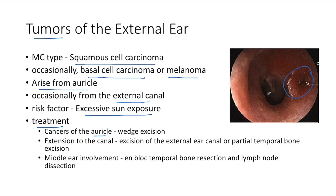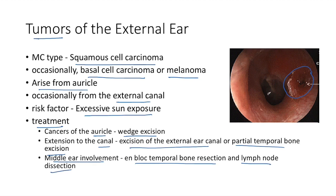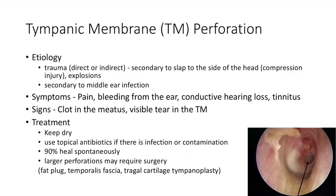Treatment of external ear cancer: for cancers of the auricle, wide excision is done. When there is extension to the canal, excision of the external ear canal or partial temporal bone excision is performed. When there is middle ear involvement, total temporal bone dissection and lymph node dissection are required. Now let us see tympanic membrane perforation.